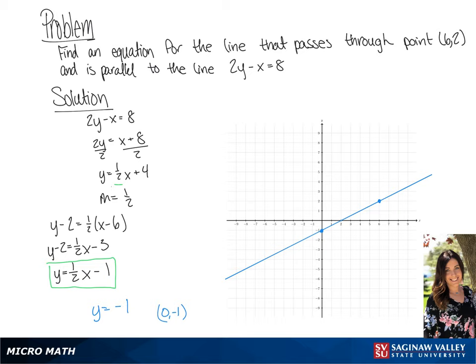We can show that this is parallel to the original line by graphing the first line using the y-intercept, which is 4, and the slope, which is 1 over 2. So we're going to use that to draw our two points and graph our line.